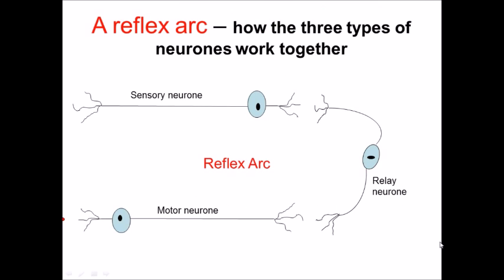A reflex arc - we're going to discuss this and show how the three types of neurons can all work together. If we use a situation of you putting your hand on something hot and that causing a reflex where you basically whip your hand away from the hot object very quickly, we can see how these three types of neurons interact with one another.